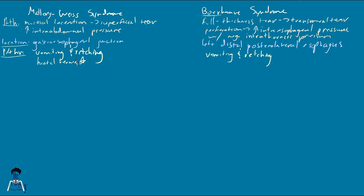Some people like to say Boerhaave syndrome is more for the chronic alcoholic or Mallory-Weiss is more for the acute binge drinker, but that really doesn't help — both can result from acute binge drinking. Just know vomiting and retching for whatever reason — whether they're alcoholics or bulimics — is what you'll see in patient history, and that's what's important.